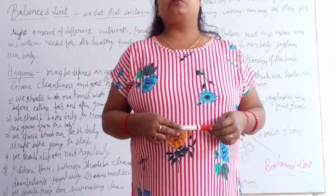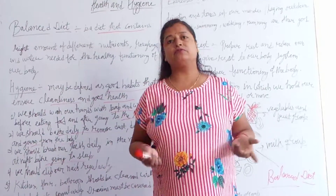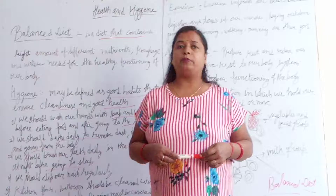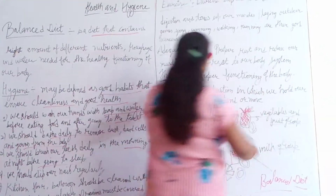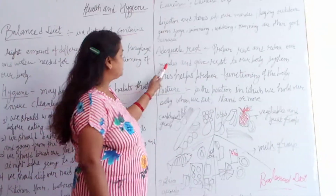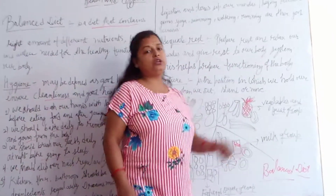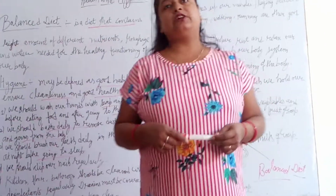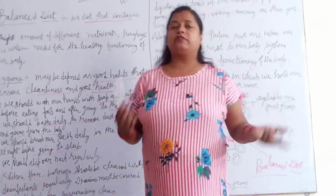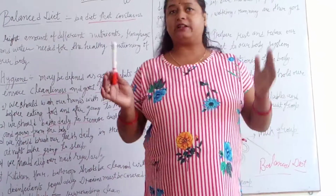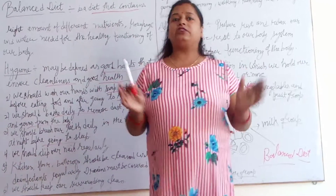Adequate rest — an adult human being needs six to eight hours of rest and proper sleep. If you are not taking proper rest, you also become ill. Proper rest relaxes our muscles and gives rest to our body systems, helping proper functioning of the body. If you are doing day-and-night work without proper rest, you may need medicines for sleeping, which is not good. It is better to do exercise and take proper rest.